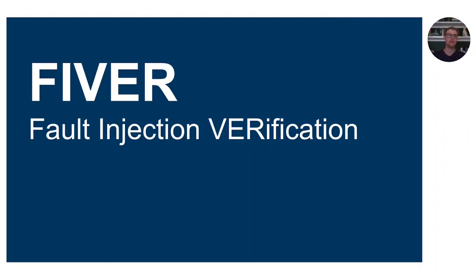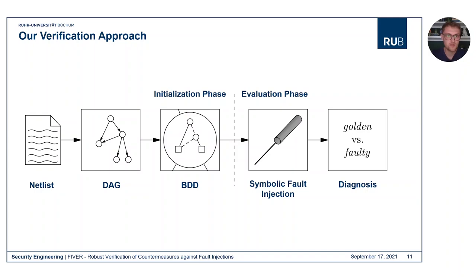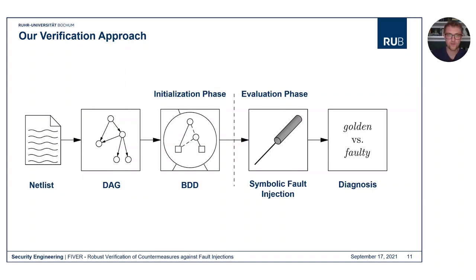This is why we developed FIVER, short for Fault Injection Verification. Our verification approach also works on a gate-level netlist. The gate-level netlist is passed into a directed acyclic graph, and then we work on BDDs, which are used to evaluate the circuit. All this happens in an initialization phase. After this, we go on with an evaluation phase where we use symbolic fault injection, followed by a diagnosis where we compare the golden model with the faulty model, and then report if the circuit is secure or not.